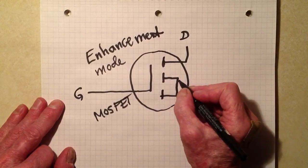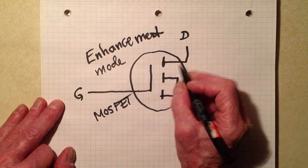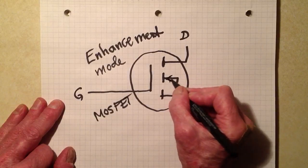Now there are, as with the other types of field effect transistors, the N channel or the P channel. N channel, we put an arrow pointing in like that.